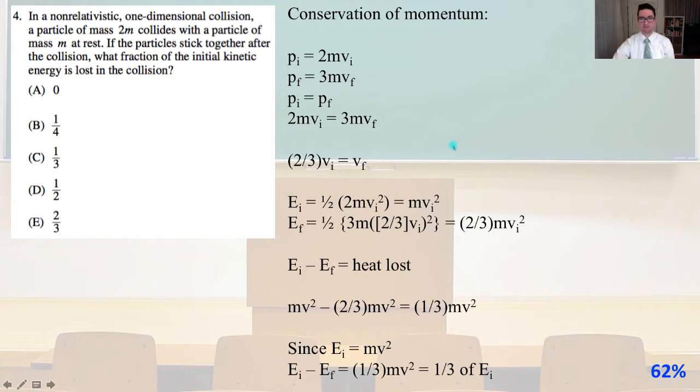Let's use conservation of momentum. The initial momentum equals 2mvi. The final momentum pf equals 3mvf. So 2mvi equals 3mvf, and two-thirds vi equals vf.